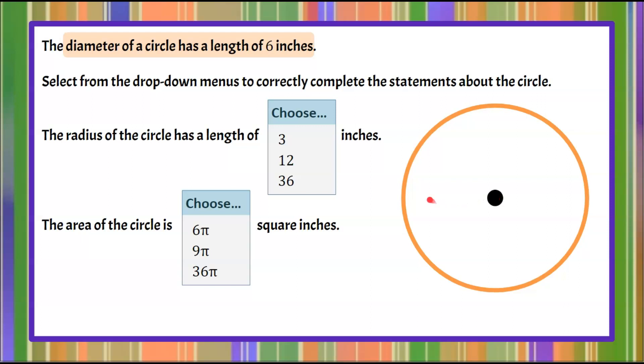The diameter of the circle passes through its center from one edge to the other, and we're told that this diameter is six inches. We're going to use the variable d to represent the diameter.